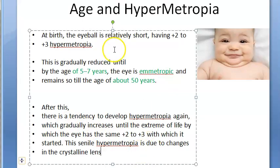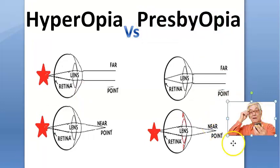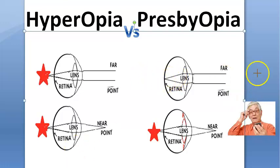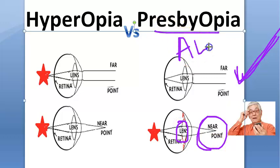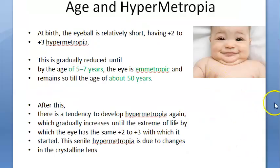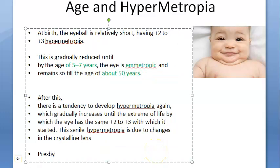You should understand the terminology presbyopia. In presbyopia, which happens with age, the person is able to see far things but not near objects like a newspaper or a mobile. This is because of accommodation loss. Presbyopia is an accommodation error, whereas hyperopia is a refractive error. You have to differentiate between the two.